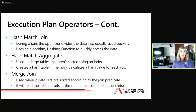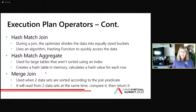Hash match joins are good for very large data. During the join, the optimizer divides the data into equally sized buckets and uses a hashing function to quickly access and join the data. Hash match aggregate is used for very large tables that aren't sorted using an index — it creates a hash table in memory, calculates a hash value for each row, and then searches and matches that way.